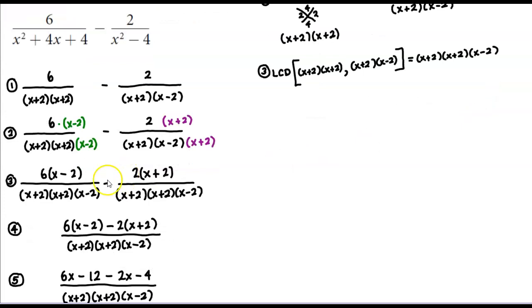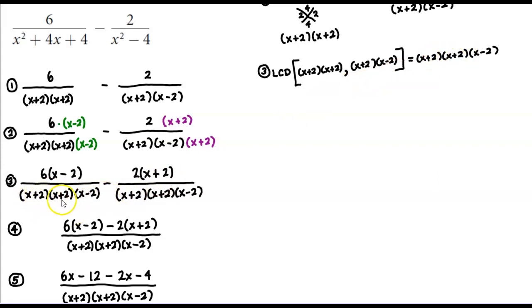In step 3, we rewrite both fractions using the new LCD as the denominator: x plus 2 times x plus 2 times x minus 2 for both fractions.